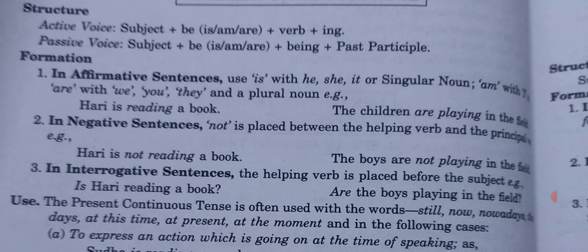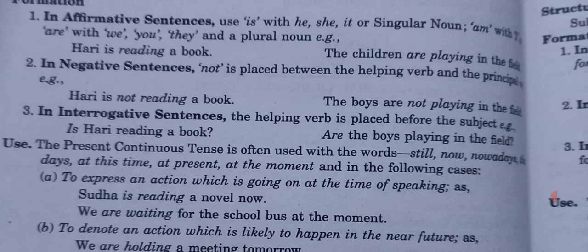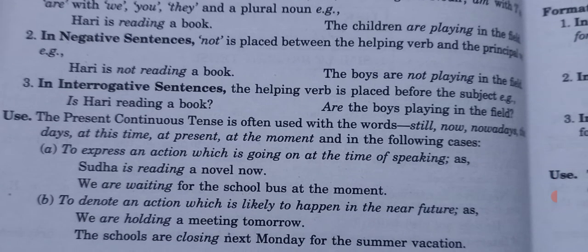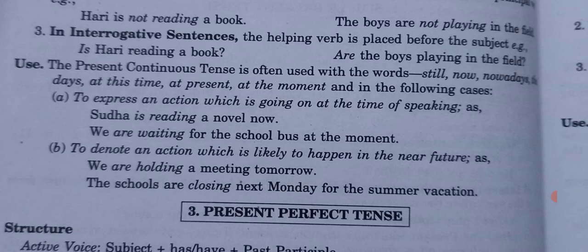In affirmative sentences: use 'is' with he, she, it, or singular noun; 'am' with I; and 'are' with we, you, they, and plural nouns. Examples: 'Hari is reading a book', 'The children are playing in the field'. In negative sentences, 'not' is placed between the helping verb and the main verb: 'Hari is not reading a book', 'The boys are not playing in the field'. In interrogative sentences, the helping verb is placed before the subject: 'Is Hari reading a book?' 'Are the boys playing in the field?'